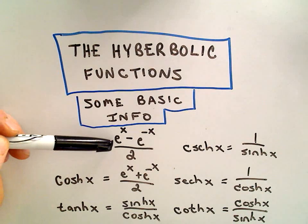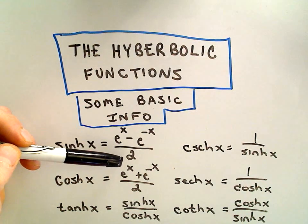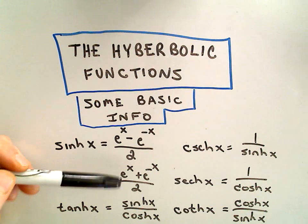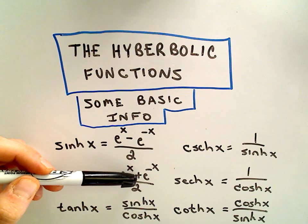Hyperbolic sine is defined to be e to the x minus e to the negative x over 2. Hyperbolic cosine, we just change the negative in the middle to a plus.